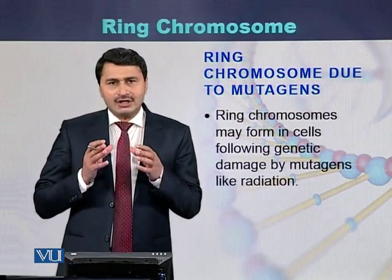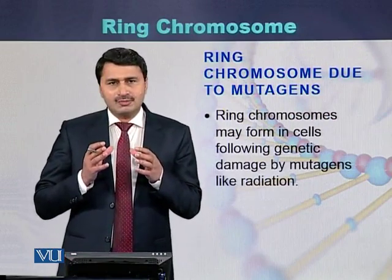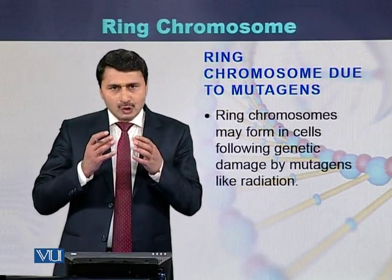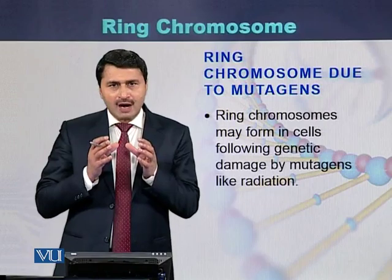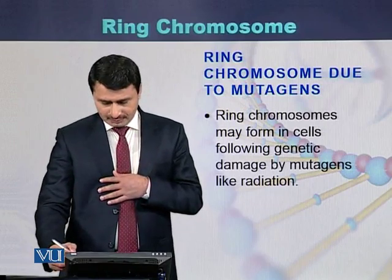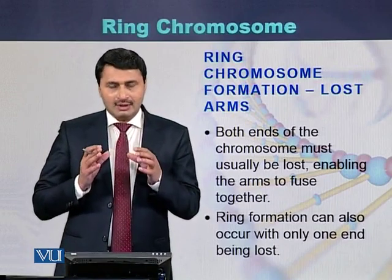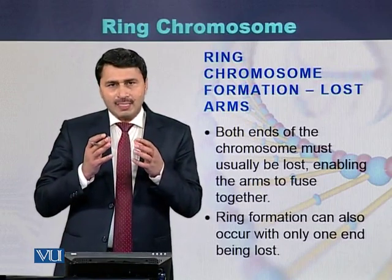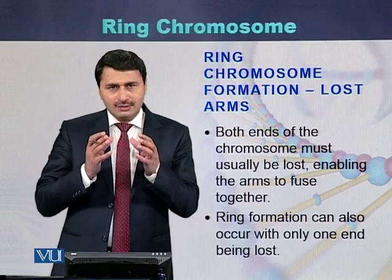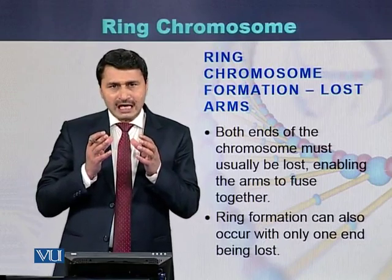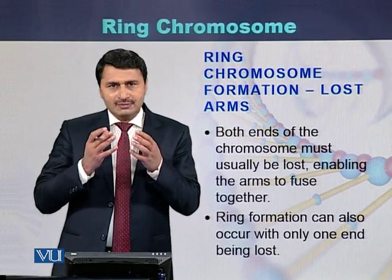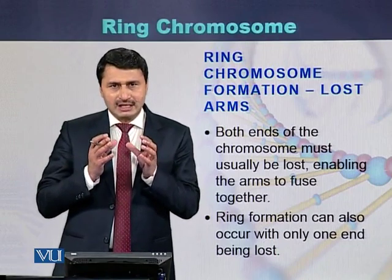In ring chromosomes, the ends of the telomeres join with each other to form a ring. Both ends of the chromosome are lost, usually with the help of certain mutagens, and once they are lost, they fuse with each other.